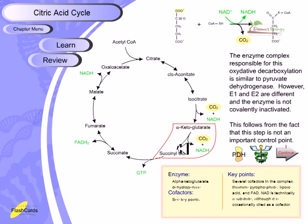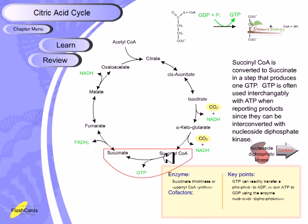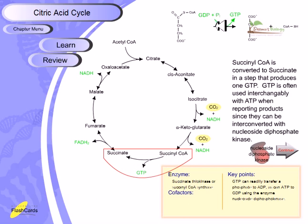The fifth step is the conversion of succinyl-CoA to succinate. This is the step that produces one GTP. GTP is often used interchangeably with ATP when reporting products since they can be interconverted, but strictly it is GTP produced here. Succinyl-CoA, with CoA attached at the first carbon, drags a phosphate group to produce GTP, cleaving coenzyme A and generating succinate.